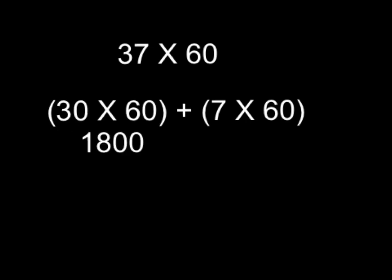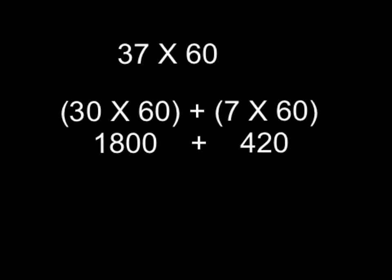When you do multiply them, go ahead and write your answer down underneath your first partial product. This will help your algebra teachers in the future. And 30 times 60 is 1800, and 7 times 60 is 420.